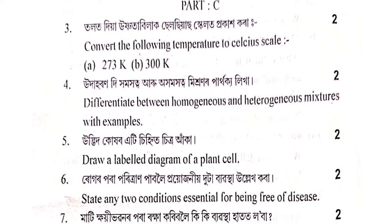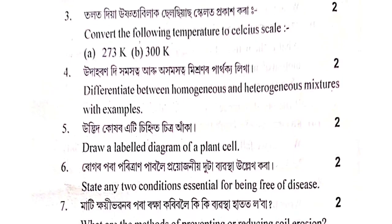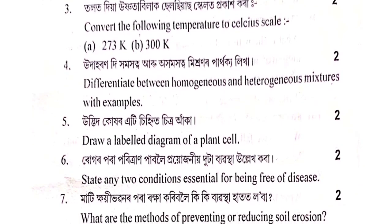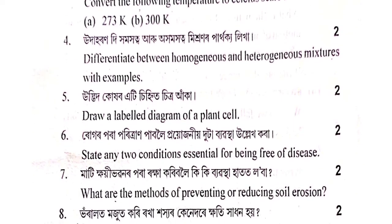Part C questions: Ustnota bilak celsius scale-ot proka kora — convert the following temperatures to Celsius scale: 273 K and 300 K. Uda haan di homoayot to aro akhmot to miso na patokko likha — differentiate between homogeneous and heterogeneous mixtures with examples.